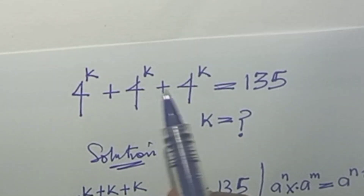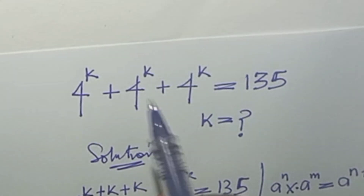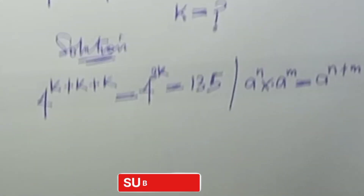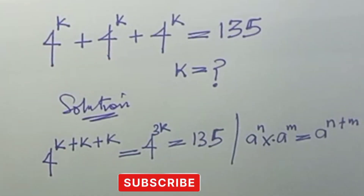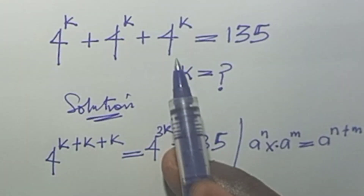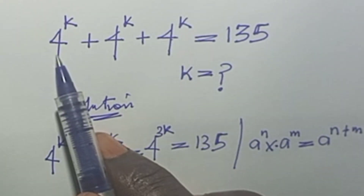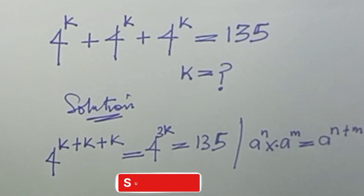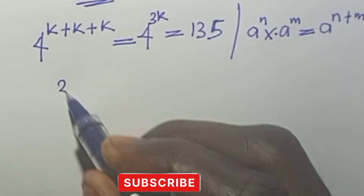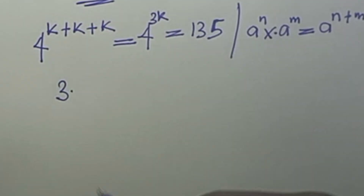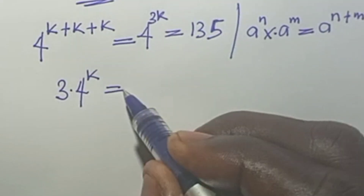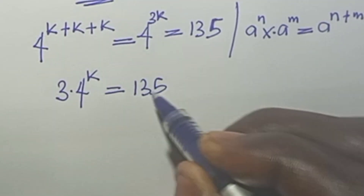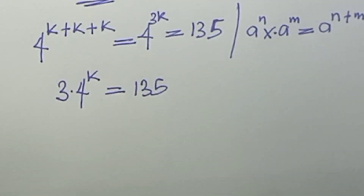Because in this case the operator is addition, the right thing to do is to simply add each of the terms. That is, 4 to the power of k appearing three times is written as 3 times 4 to the power of k, and this equals 135.